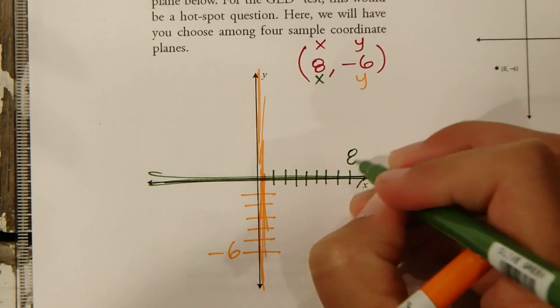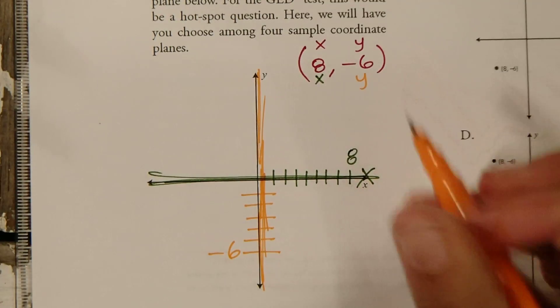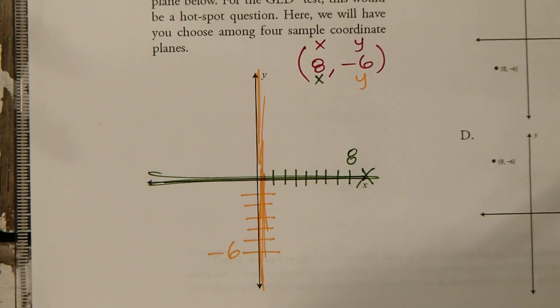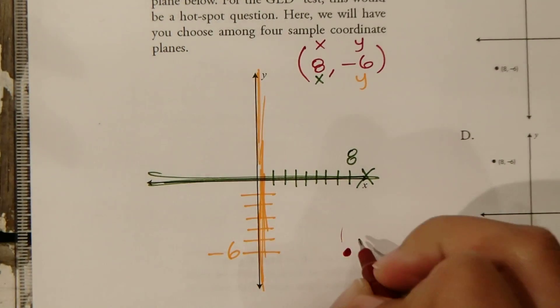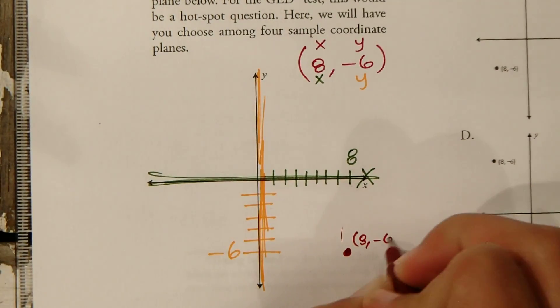This is positive 8 here. So we're going to plot a point where those meet. 8, negative 6. So it's going to be right here. This is the point. Positive 8, negative 6.